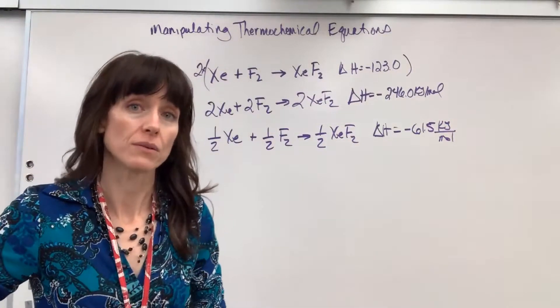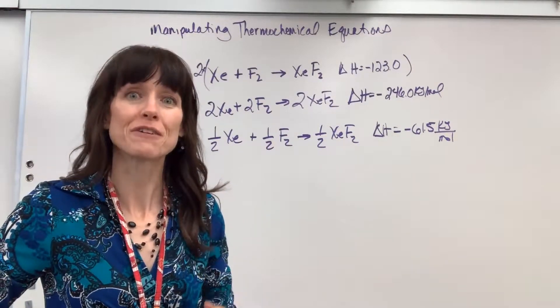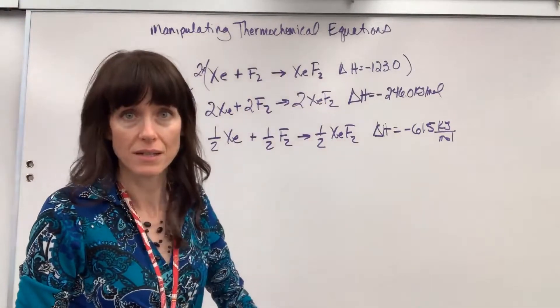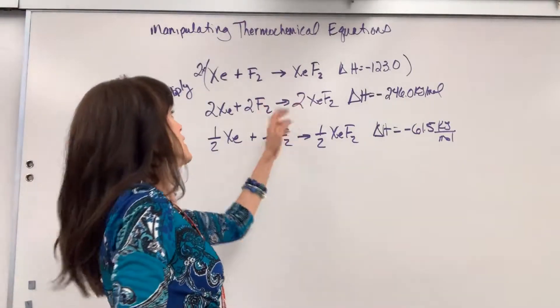Now one other thing that we could do, we could flip the reaction. We could go in the reverse direction. So here I'm producing xenon difluoride. Well let's flip that. If I flip this, let's say that I start with the xenon difluoride...